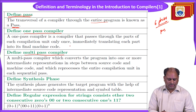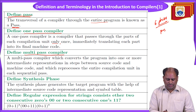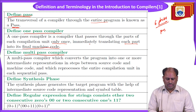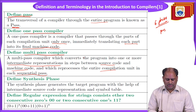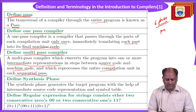A one pass compiler passes through the parts of each compilation unit only once and immediately translates each part into its final machine code. A multi-pass compiler converts the program into one or more intermediate representations in steps between source code and machine code, reprocessing the entire compilation in sequential passes. Some phases are represented as a first pass and the remaining phases as the second pass.